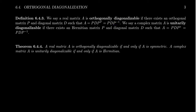So when it comes to orthogonal diagonalizations, we're saying A equals P·D·P^T, where D is still diagonal, P is now an orthogonal matrix, and hence P^T acts as the inverse of P. We can also say the same thing for a unitary diagonalization — something unitarily diagonalizable — if there exists some unitary matrix P so that A equals P·D·P^{-1}, which of course is the same as P·D·P*.